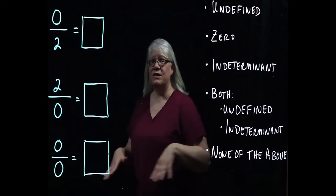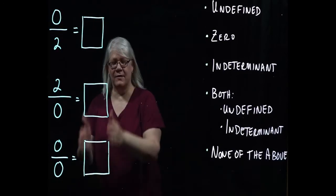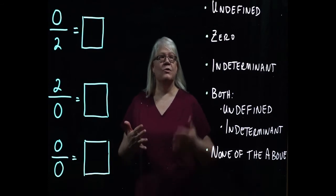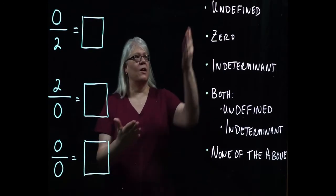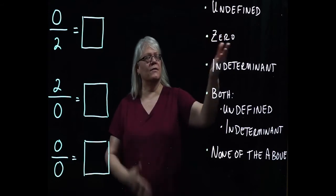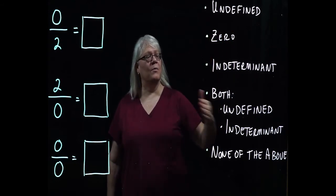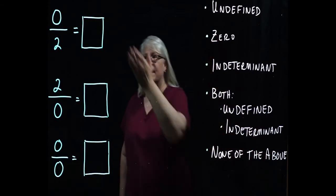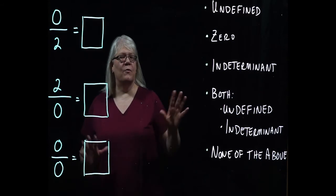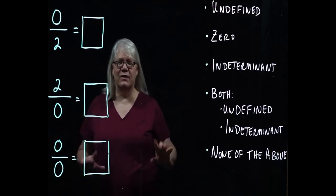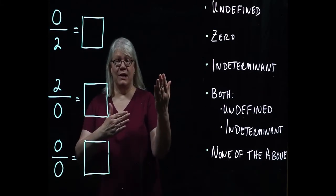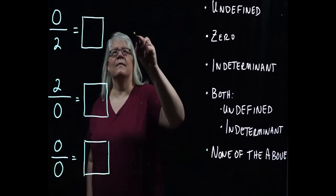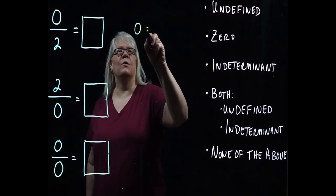All right. Based on this new information, let's see if you can fill in the values for these ratios. Now I've kind of made this a multiple choice problem. The choices that you have to fill in these boxes are these right here. You can choose undefined, zero, indeterminate, both undefined and indeterminate, and none of the above. One of these will fit in one of these. So now before you go ahead and willy-nilly make your decision, let's use the step of rewriting these as multiplication to help us out.